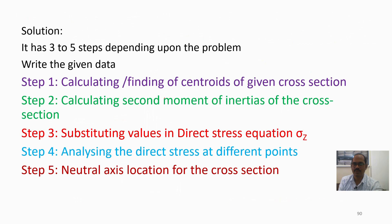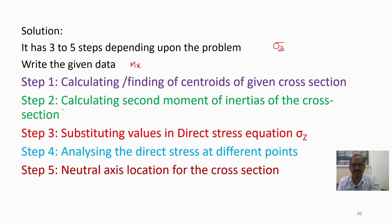This is the given data as per the problem. We need to calculate the direct stress of the given cross-section using the sigma z formula. The solution follows up to 5 steps. First, we write down the given data: Mx is given, My equals 0, and Ixy equals 0. In step 1, we calculate the centroid of the given cross-section. In step 2, we calculate the cross-sectional properties — the second moments of area Ixx, Iyy, and Ixy.